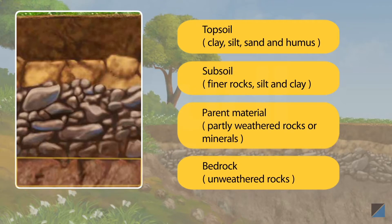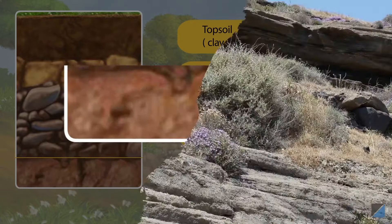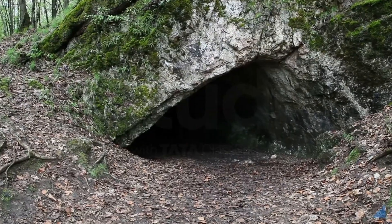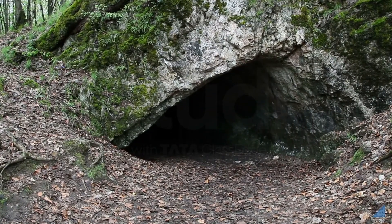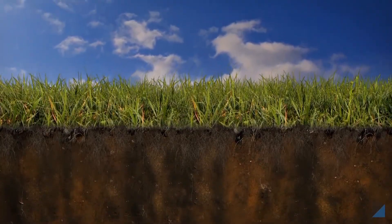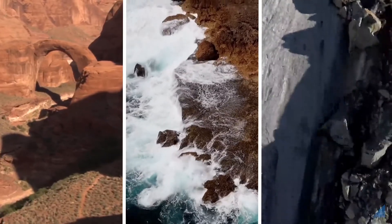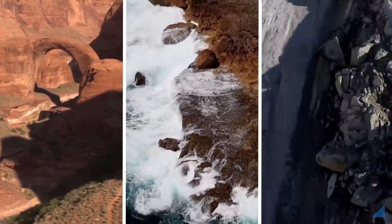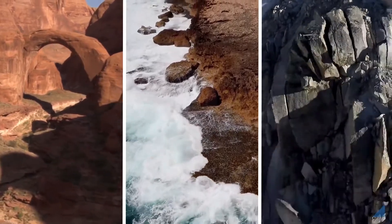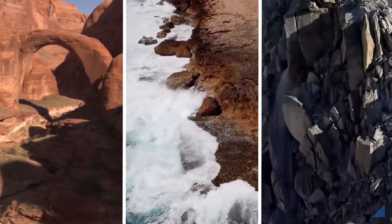The last layer beneath soil and gravel is the layer of unweathered rock known as bedrock. The bedrock can extend hundreds of metres underneath the surface. Thus, the soil is formed by the weathering of parent material by the action of forces of nature like wind, water and ice.